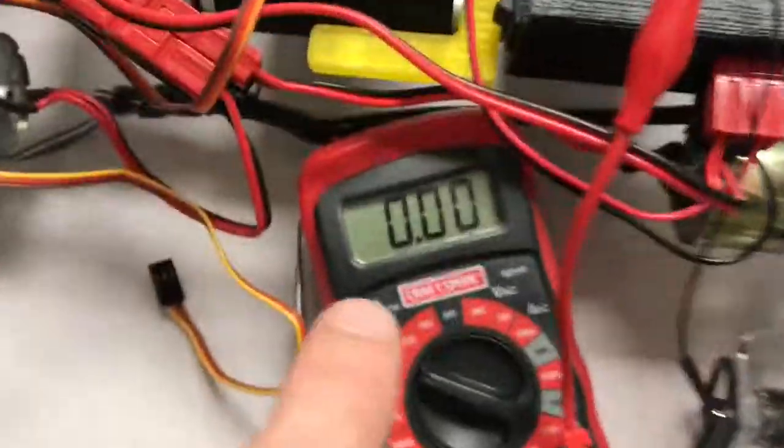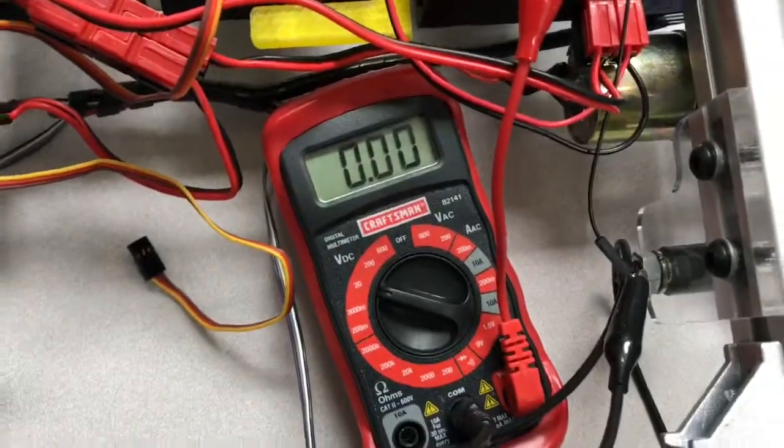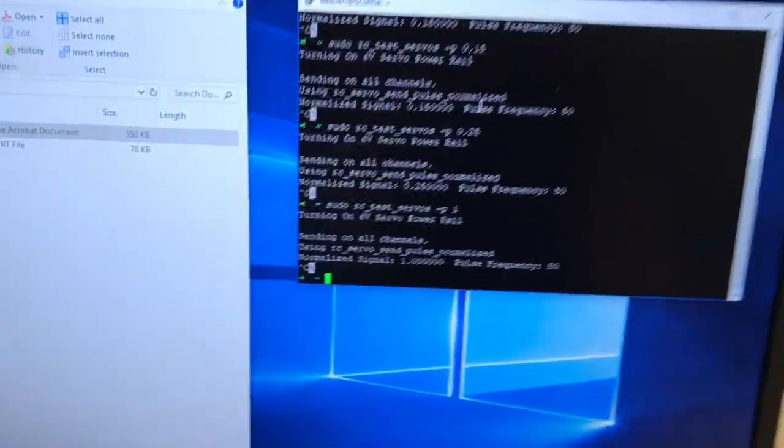Ground and positive are connected to my Craftsman multimeter. I'm reading zero volts.